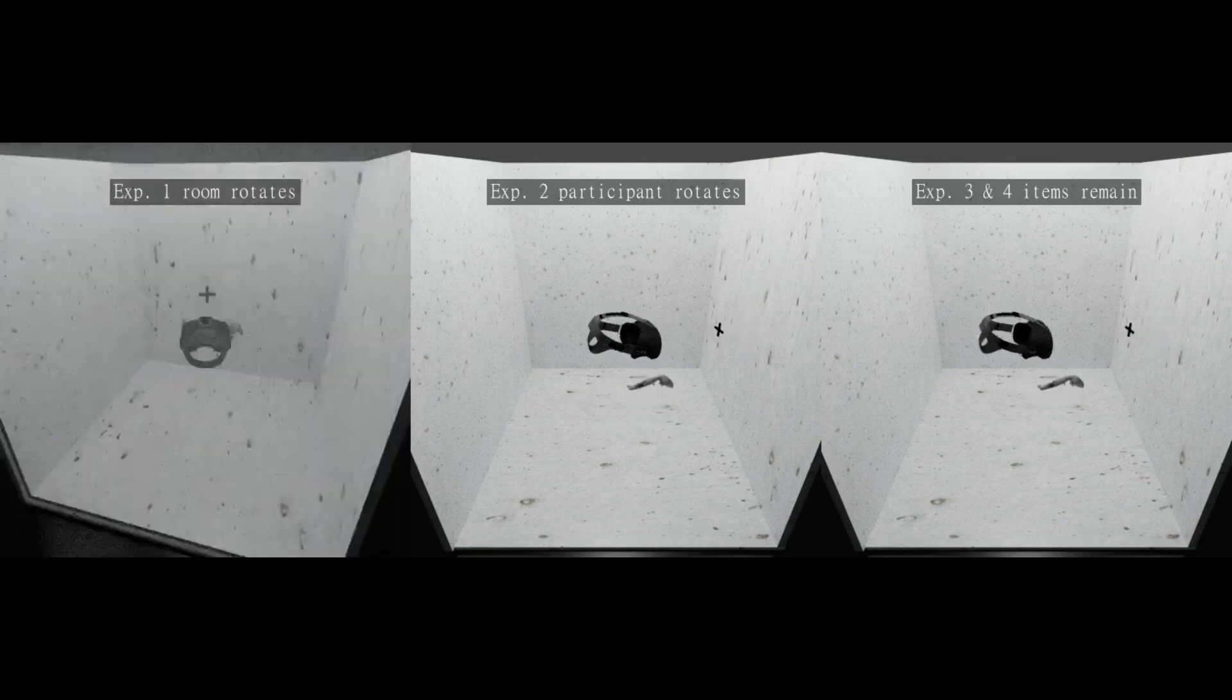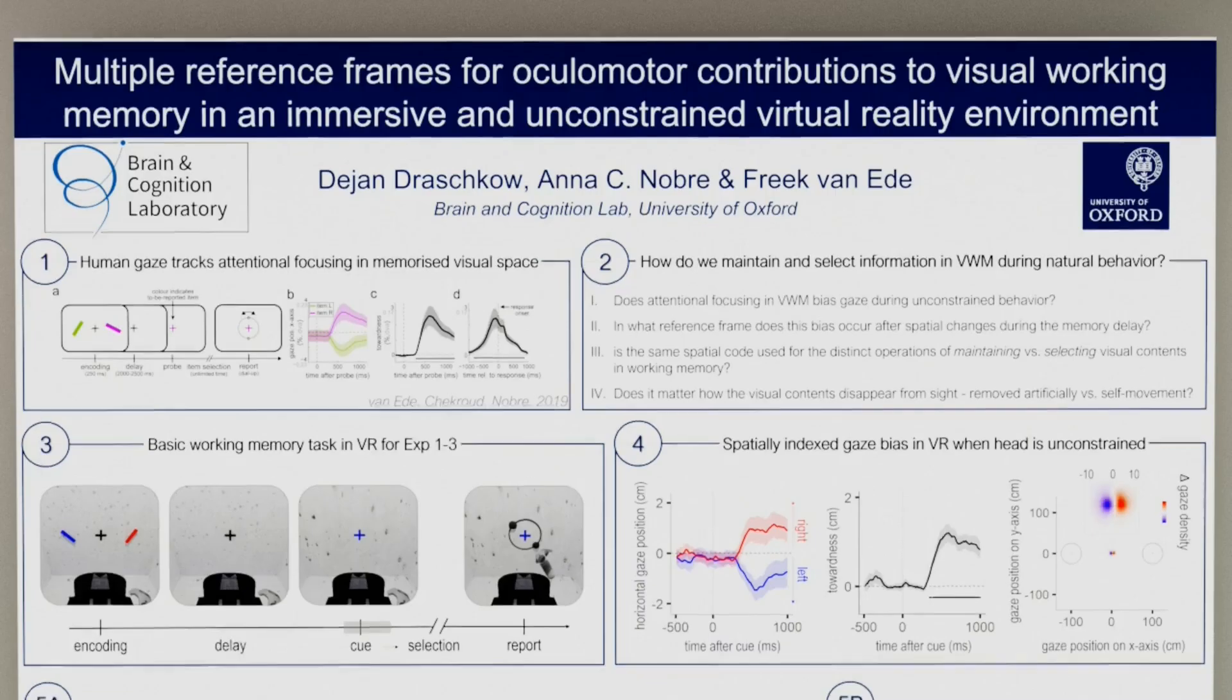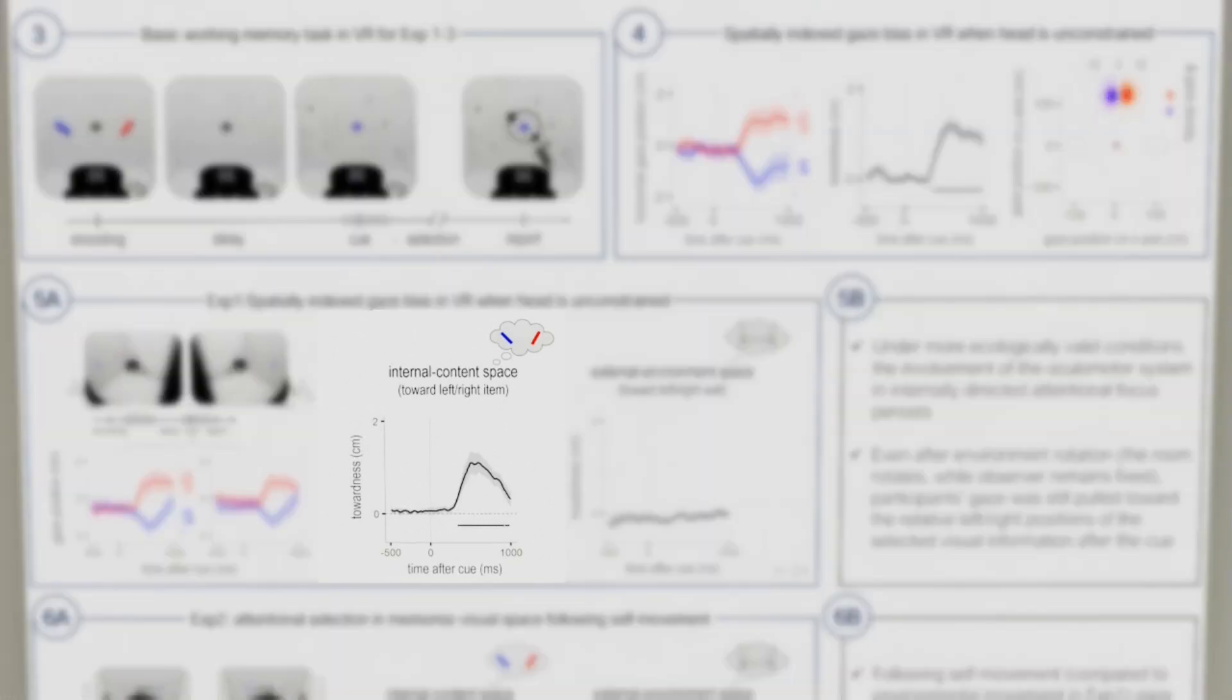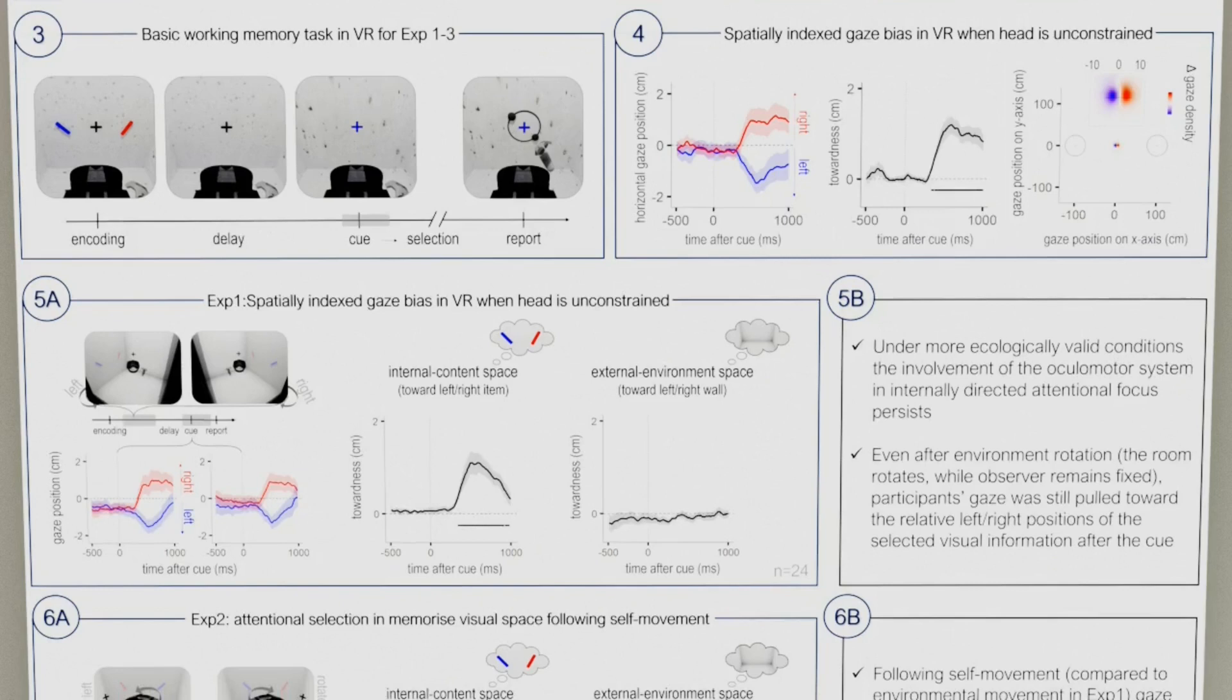In the first experiment, we manipulated the relative spatial position of the observer and environment by rotating the room during the working memory delay while the participant remained in place. Bias in internal content space, which was quite evident here, indexes gaze bias towards the left-right cued item, that is the relative position of the items. Bias toward the left-right wall containing the items before the rotation, that is external environment space, did not occur here. Thus there was no evidence that the assumed current location of the item in the environment was used.